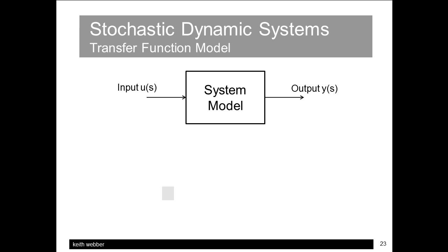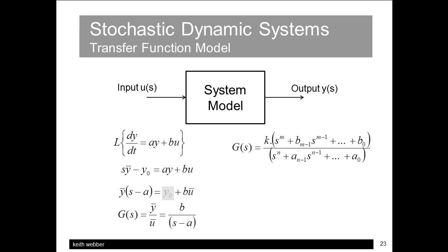Continuous dynamic systems are modelled by differential equations. The standard transfer function description of a linear time-invariant dynamic system is shown here. It's formed by taking a Laplace transform of the system differential equation, linking the input and output, assuming zero initial conditions, and rearranging as a ratio of output to input. In general, it's a ratio of numerator and denominator polynomials in S that can be factorised into first-order real and imaginary roots, the poles and zeros of the S-plane.